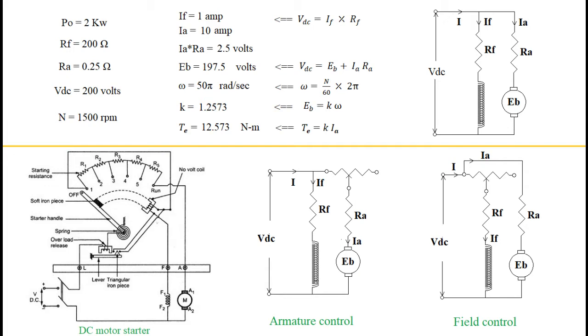From this data, we calculate field current as the ratio of supply voltage to field resistance, which equals 1 ampere. For the armature circuit, estimating 10 amperes of armature current gives an armature resistance drop of 2.5 volts. Deducting this from supply voltage gives a back EMF of 197.5 volts. All calculations are shown on screen.